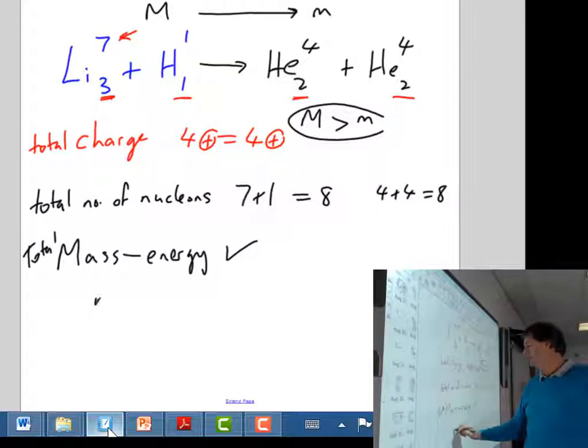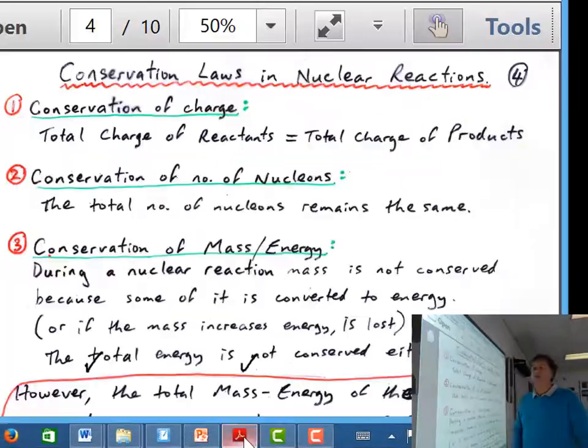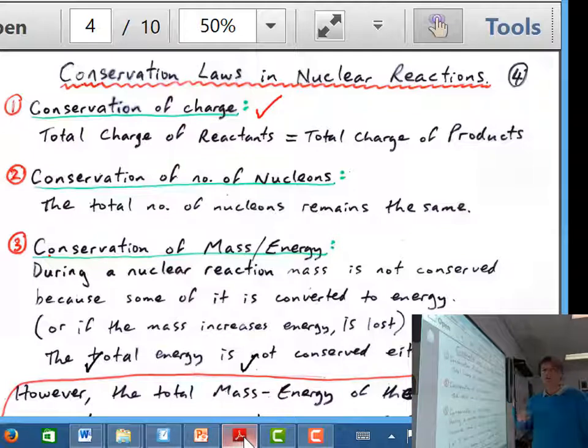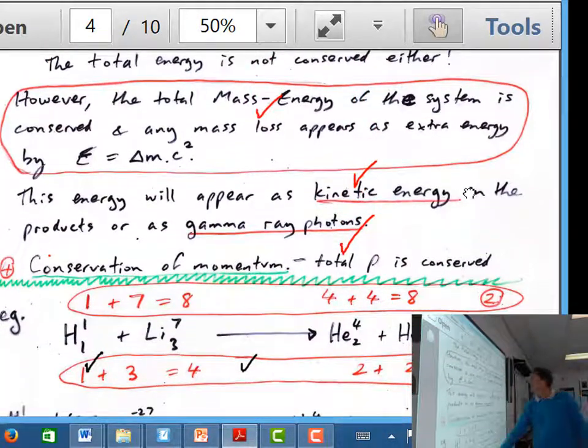Now the last thing that's conserved is momentum. As in all collisions and all interactions, the momentum before the collision, or before the reaction, has to be the same as after the reaction. Now I've got this down in my notes for you on here. We look at this. Key things are conservation of charge, so the atomic numbers should add up together to be the same. The conservation of the number of nucleons, the mass numbers should end up being the same before and after as a total. You should conserve the total mass energy there, and so therefore any mass that goes missing will become energy, so that the total remains the same. And we're using that E equals mc squared formula to work that out.